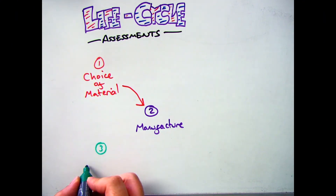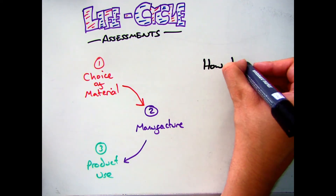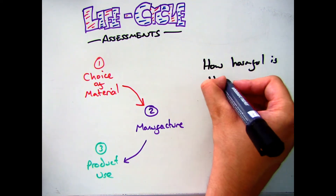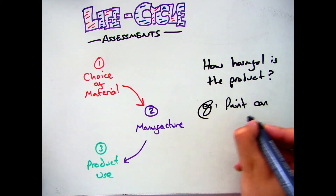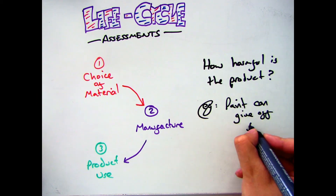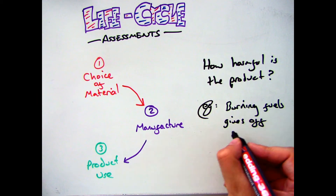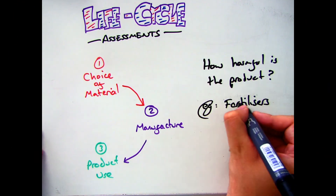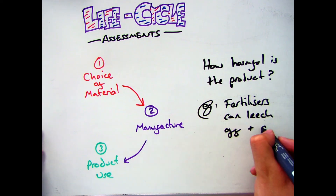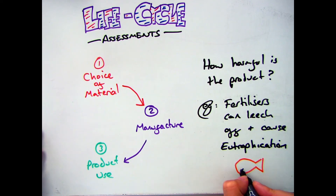Once you've done the manufacturing process, it's onto the product use — looking at how useful that product is: how useful is it, how long is it going to last, is it going to break easily, and is it going to produce anything harmful? By using that product, is it harmful? For example, some paints give off toxic fumes, burning fossil fuels gives off greenhouse gases and can cause acid rain, and if it's a fertilizer they can leach off into lakes and cause eutrophication. So you've got to look at what impact using that product is going to have.